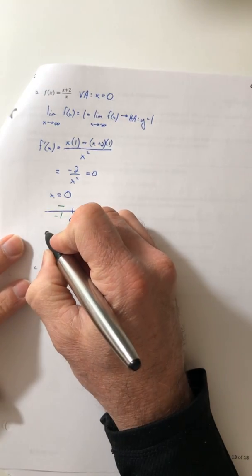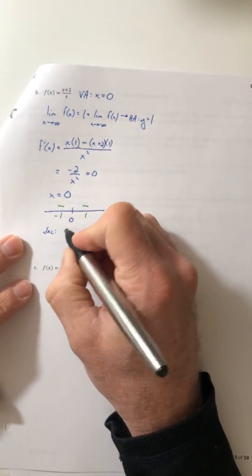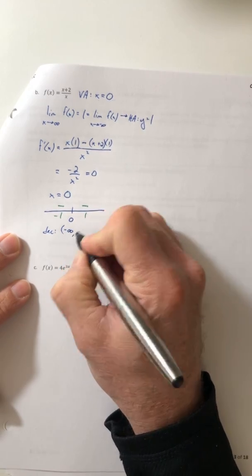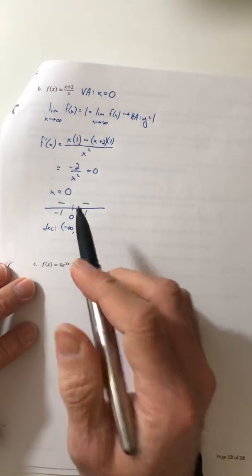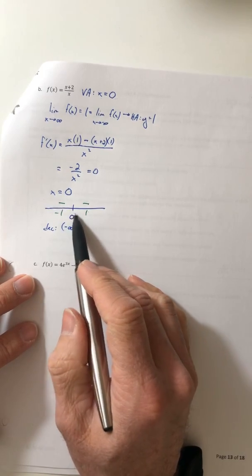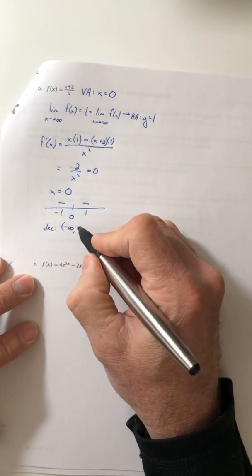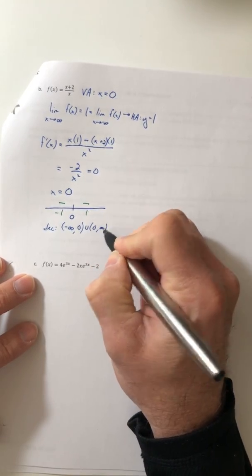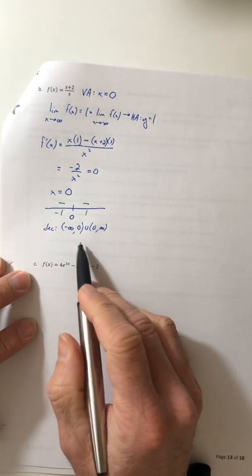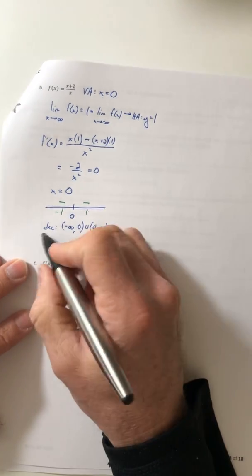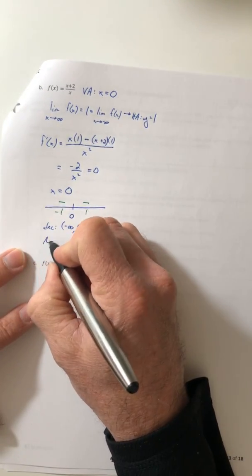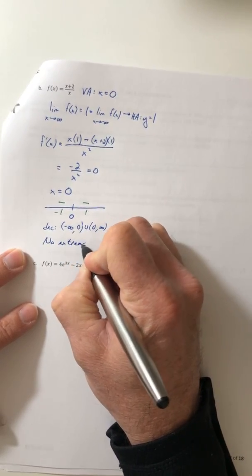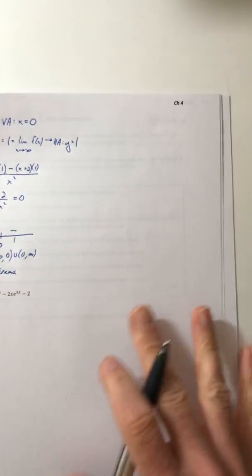So that means it's decreasing the entire time. But I'm not going to write that as negative infinity to infinity because x equals zero is not part of the domain. So I'm going to have to skip over zero. So no intervals of increasing and no extrema. So it does not have a maximum or a minimum.